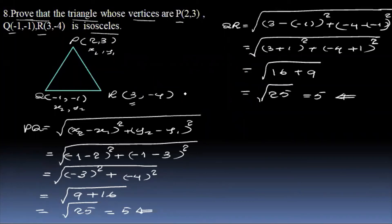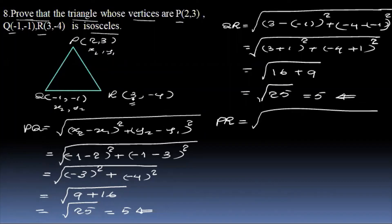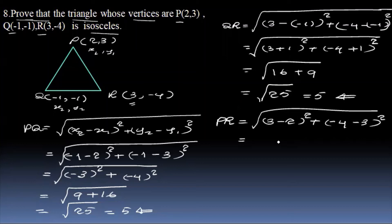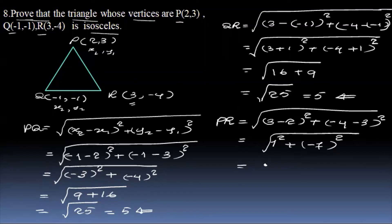The value of PQ, QR is P. R is equal to R. x1 is equal to 3 minus 2, the whole square plus minus 4 equals 3 minus 3 the whole square. Minus 3 is equal to 1. Minus 1 minus 3 is equal to minus 4, and minus 7 equals 1. So minus 3 plus 1 is equal to 2.